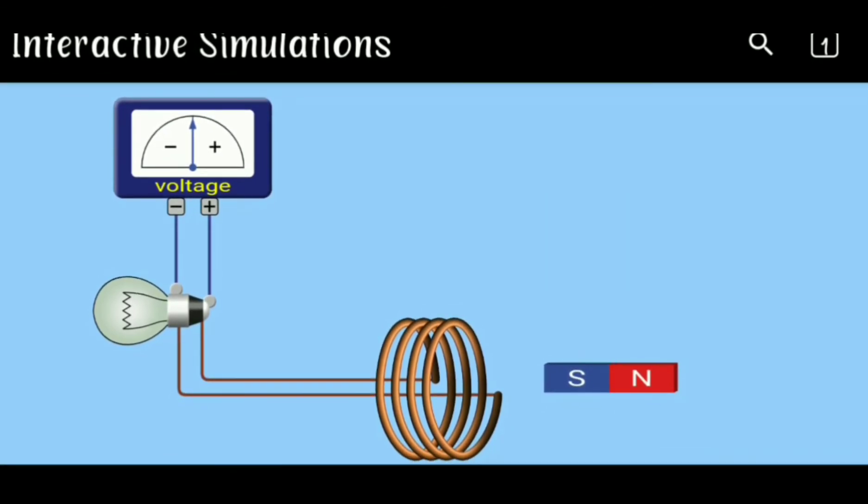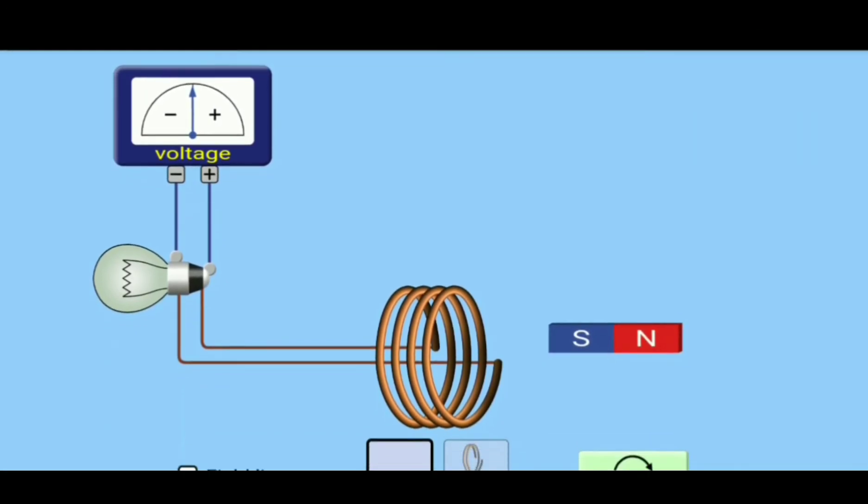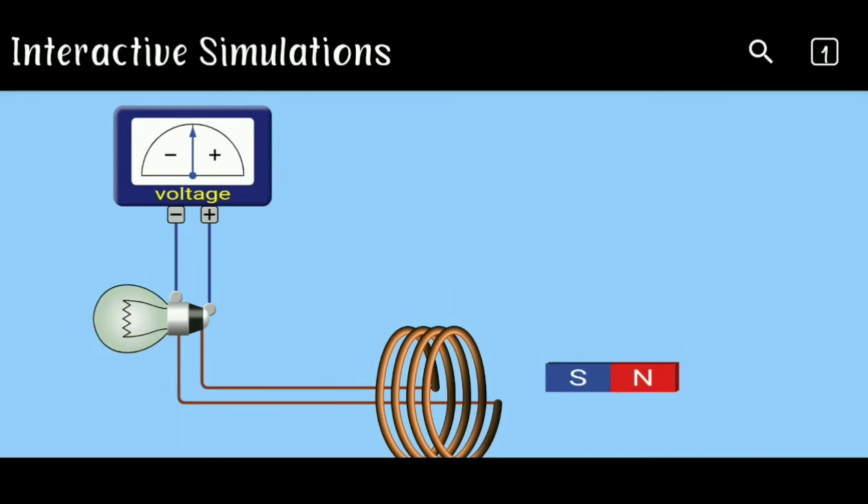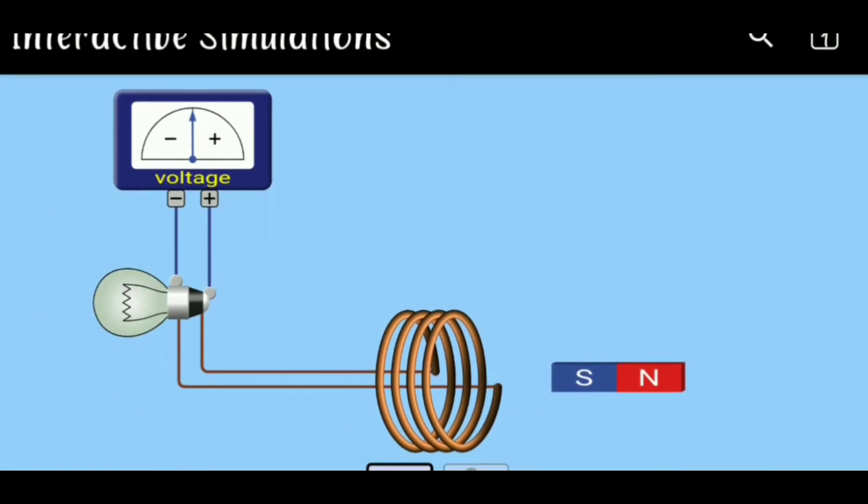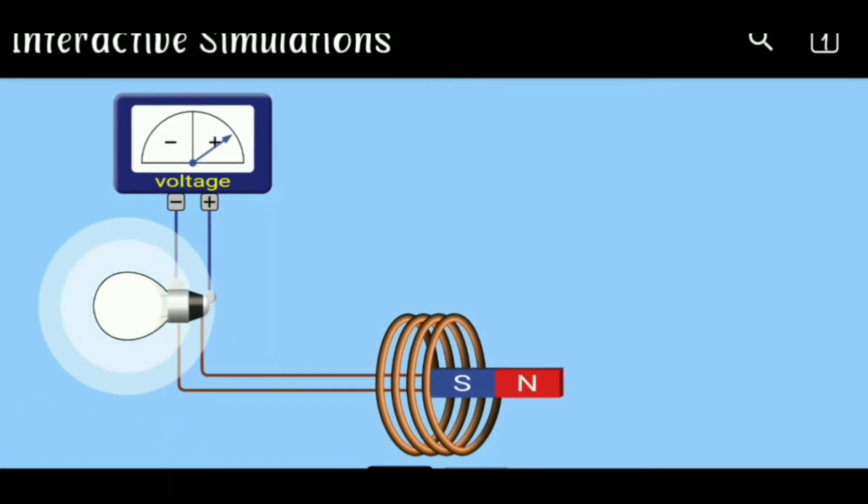See, I'll move the magnet now. When the magnet with south pole is moved in, the galvanometer shows deflection. Moved out—again deflection and the bulb glows. Moved in, moved out, moved in, moved out.